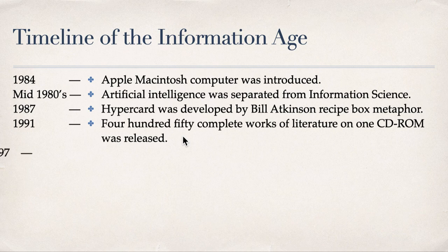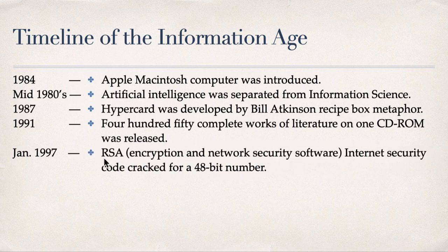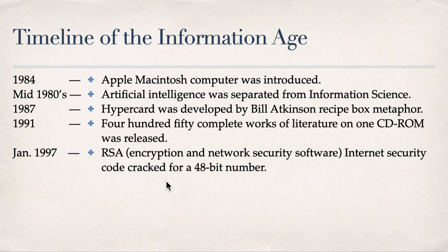In January 1997, RSA — the last names of three people who invented it — encryption and network security software was developed, with an internet security code cracked for a 48-bit number. The timeline from my content ends here, but certainly there have been many more developments as the years after 1997 passed.